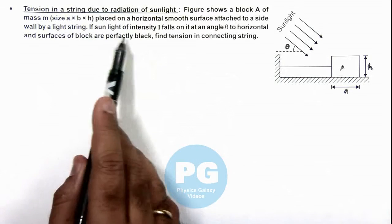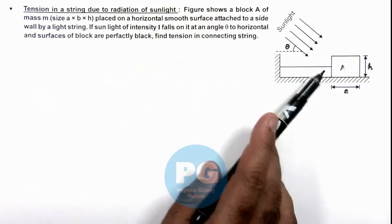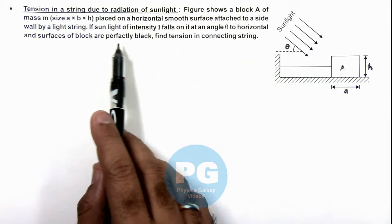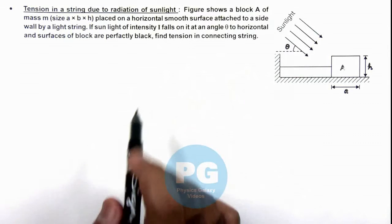If sunlight of intensity I falls on it at an angle θ to horizontal, and surfaces of block are perfectly black, we are required to find tension in the connecting string.